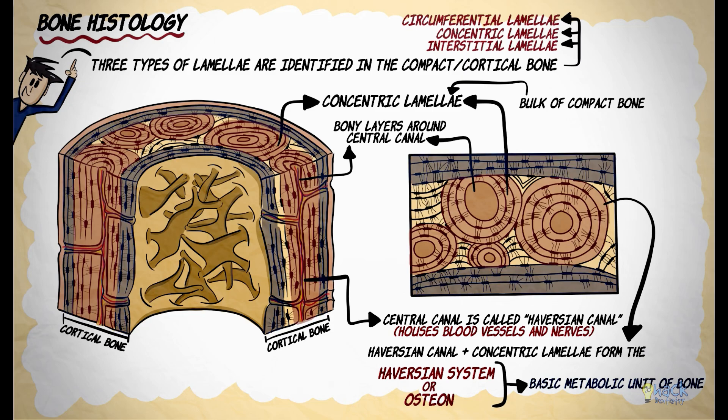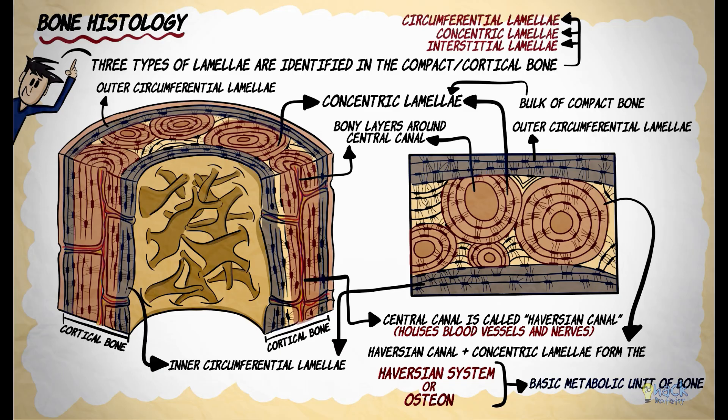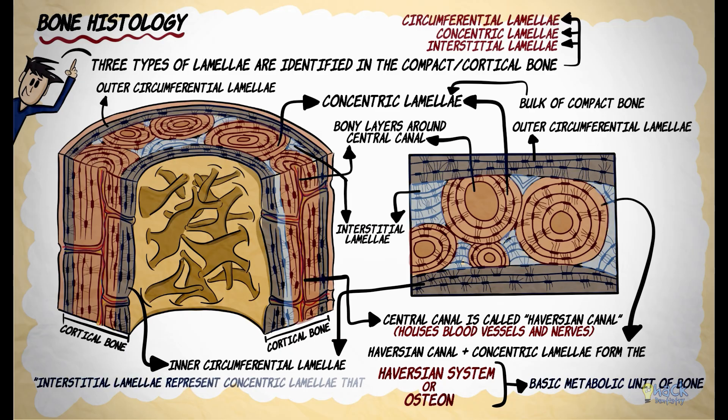Circumferential lamellae surround the outermost and innermost layers of the compact bone. The lamellae found in between concentric lamellae are called the interstitial lamellae, which actually represent concentric lamellae that have been partly resorbed and remodeled and no longer surround a haversian canal.